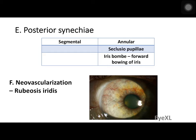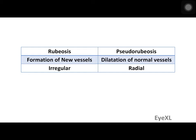Neovascularization is also known as rubeosis iridis. The subtle difference: rubeosis describes actual new blood vessel formation, while pseudorubeosis means dilatation of already existing normal blood vessels. The difference is identified by the pattern — rubeosis has an irregular, haphazard pattern, whereas pseudorubeosis maintains a radial distribution identical to normal iris blood vessels.